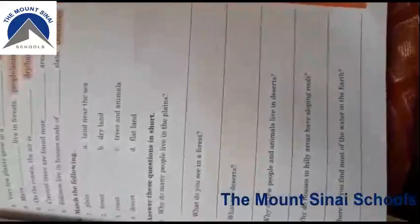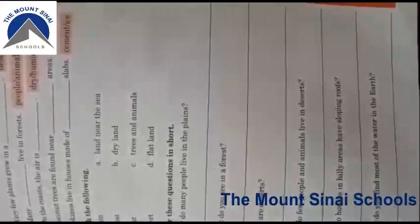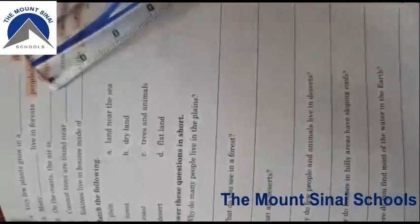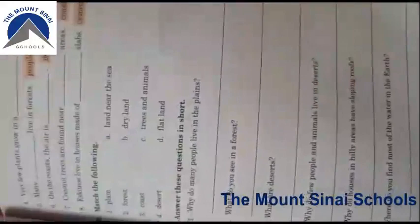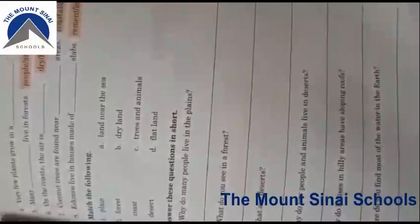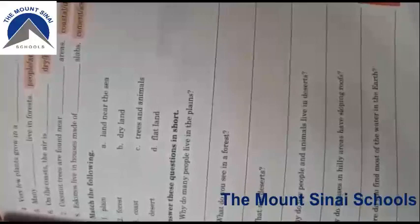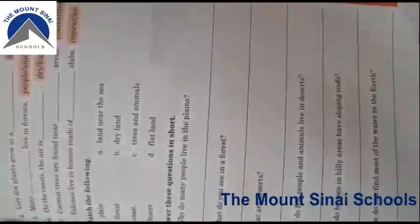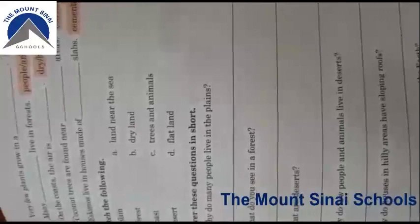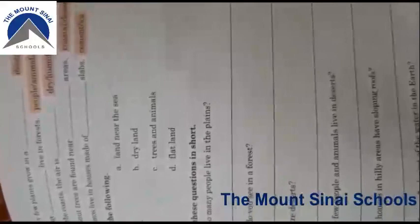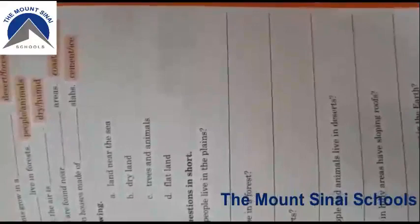On page number seven: very few plants grow in the desert — because in forests there are many plants, so the correct option is desert. Many animals live in the forest. On the coast, the air is humid. Coconut trees are found near coastal areas. And Eskimos live in houses made of ice slabs — so the correct option is ice slabs.